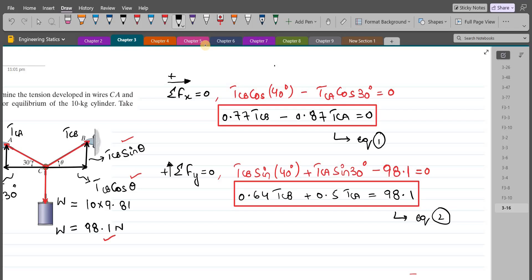So now we have two equations and two unknowns, so we can simultaneously solve them. You can use any of the methods. I'm going to use the method of substitution. So for that, I would consider equation one.